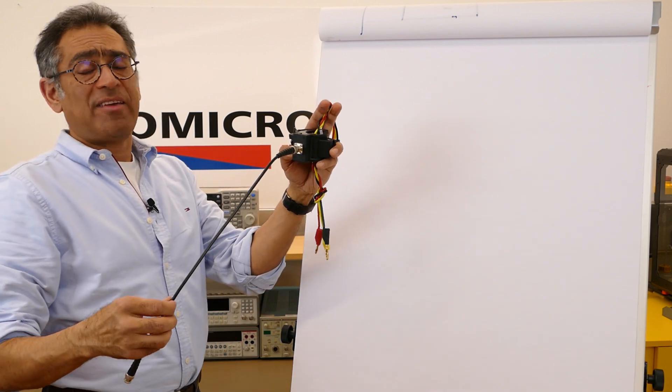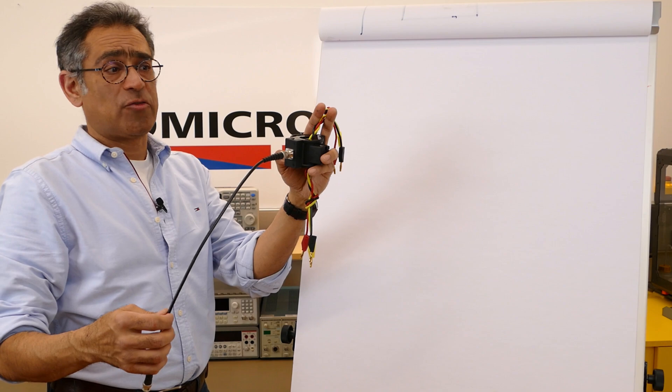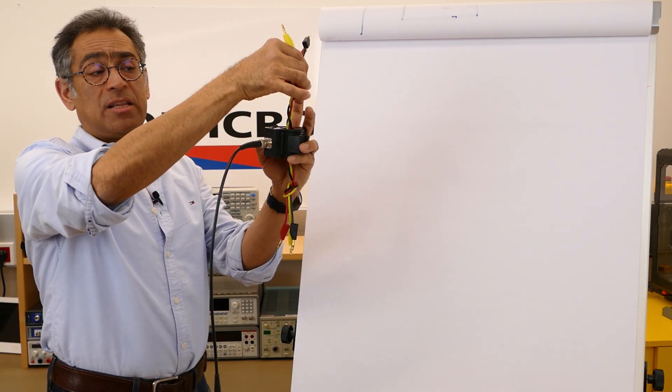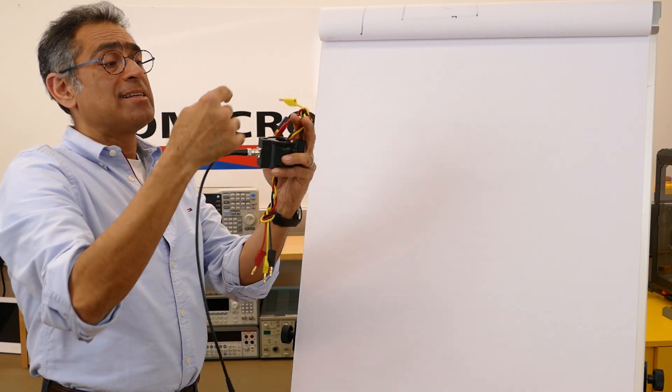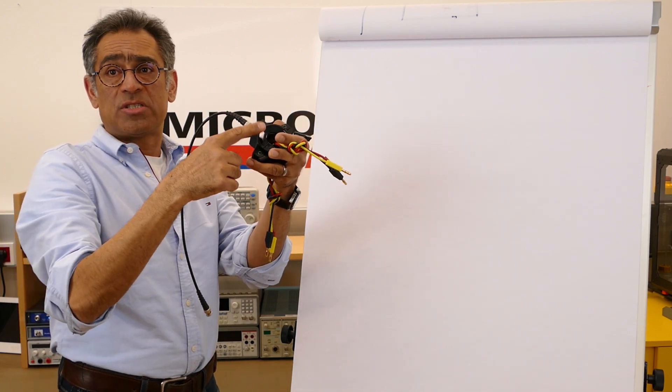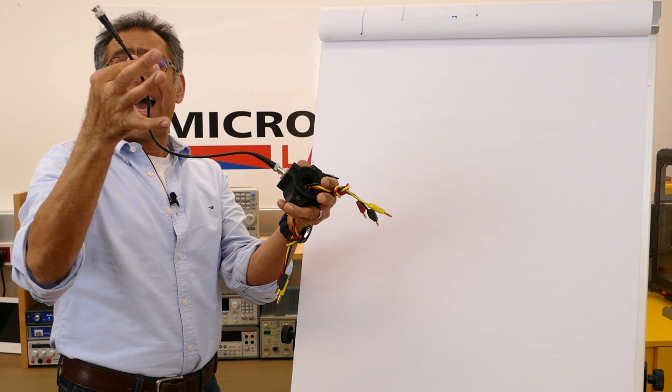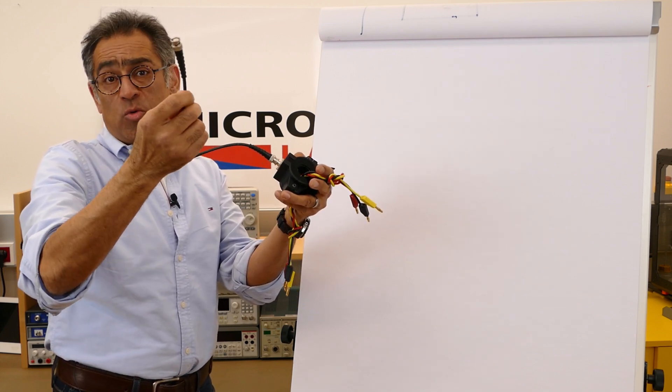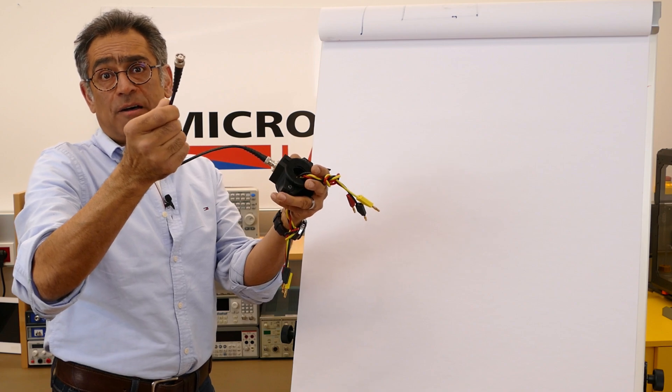So in effect what you have here is a current transformer whereby you've got one single turn on the primary, that is the cable of your device under test, several turns on the secondary which is inside of the current clamp, and then the output of that is going to go to a spectrum analyzer which has got an impedance of 50 ohms.